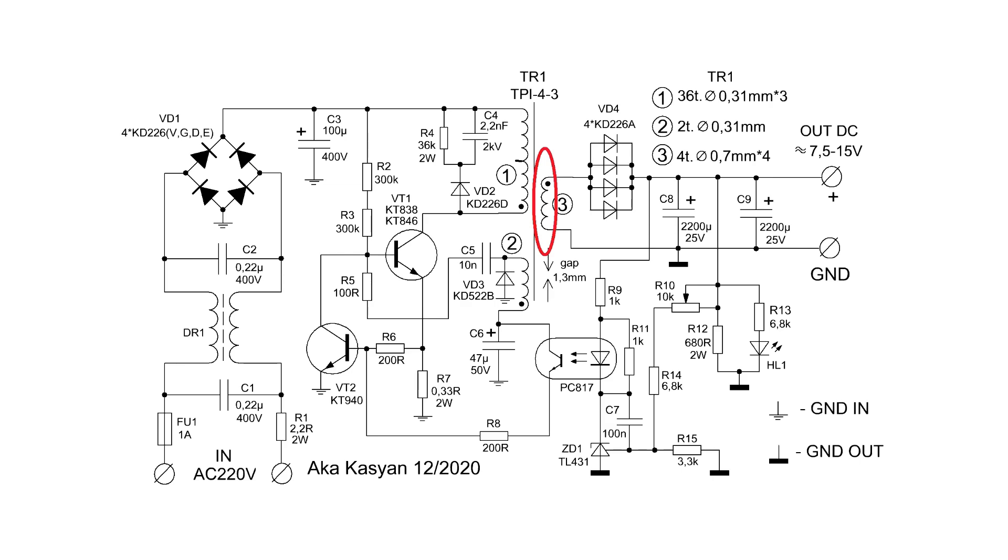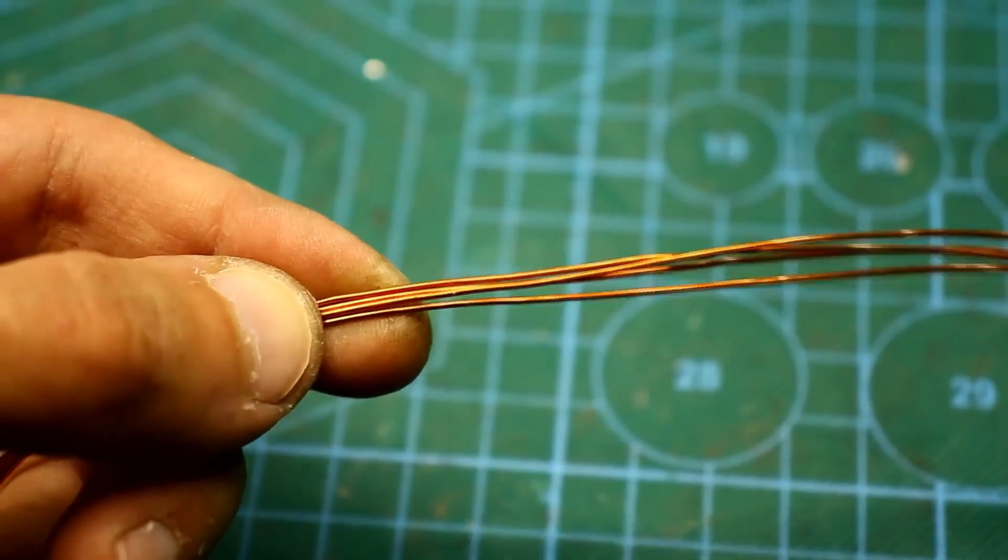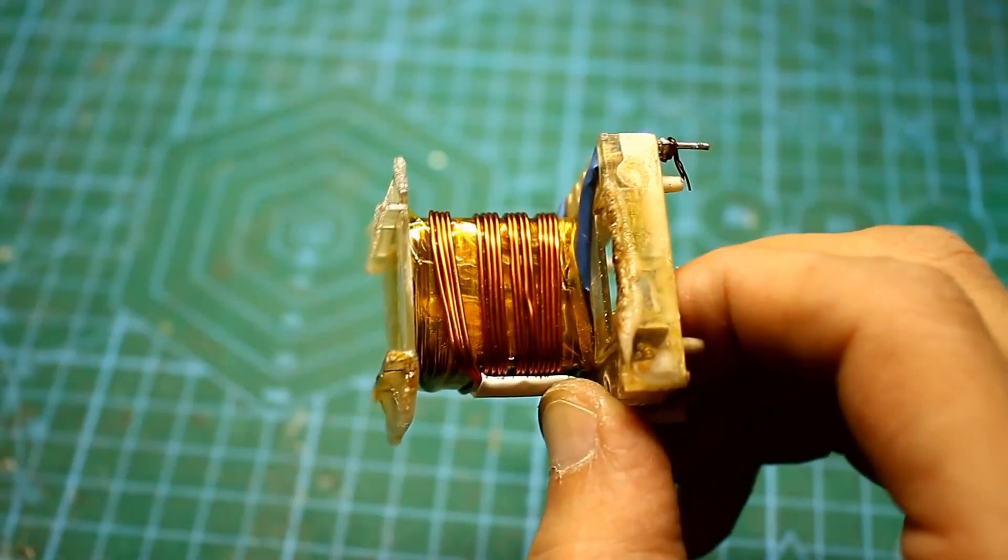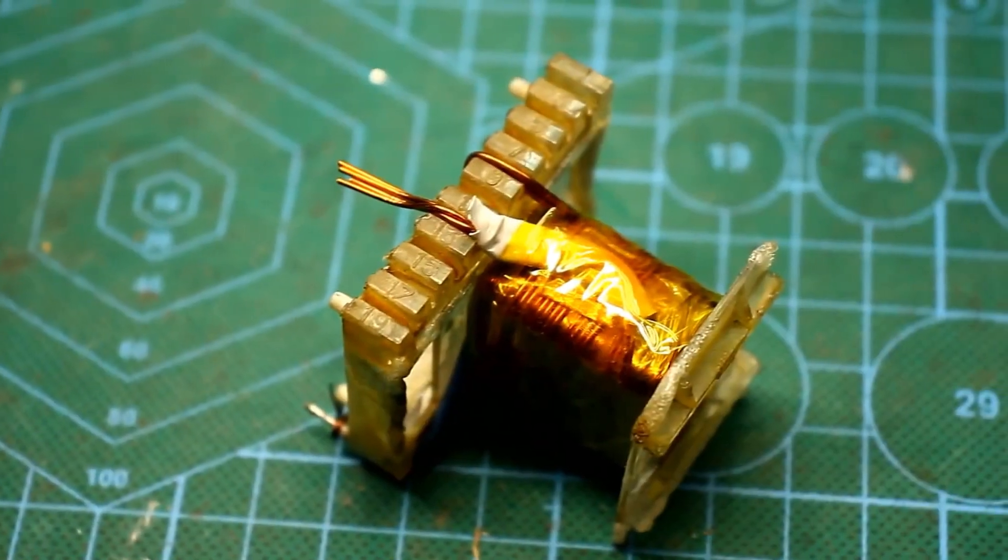After that, we wind a secondary or power winding completely. In our case, this winding is wound with a 0.7 millimeter wire and four strands. The number of turns is four.